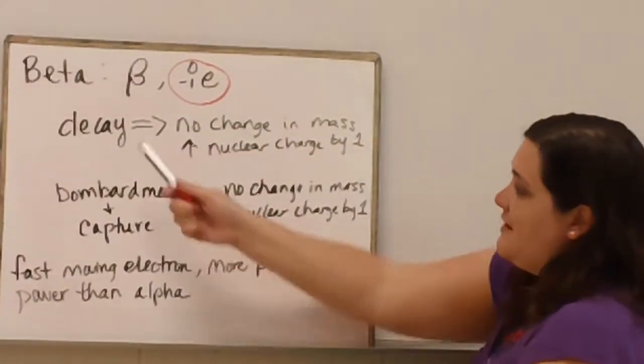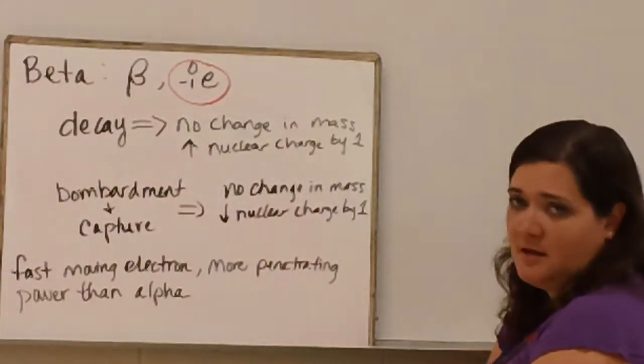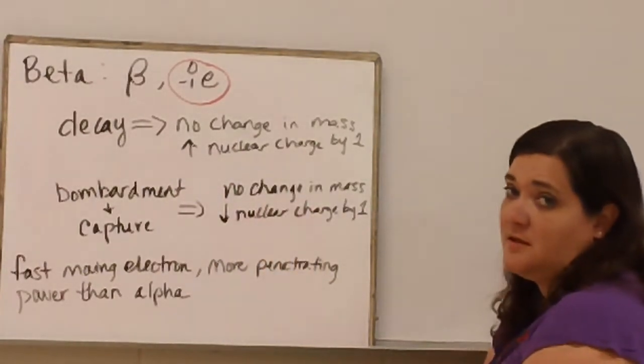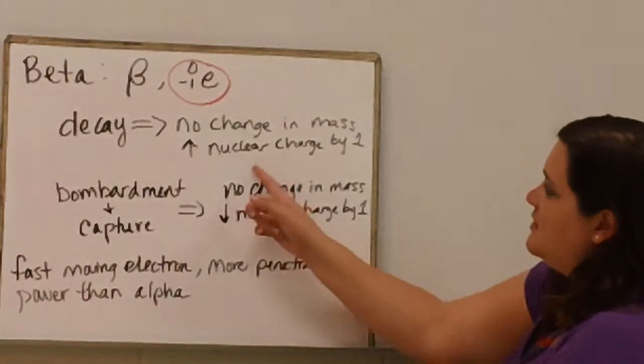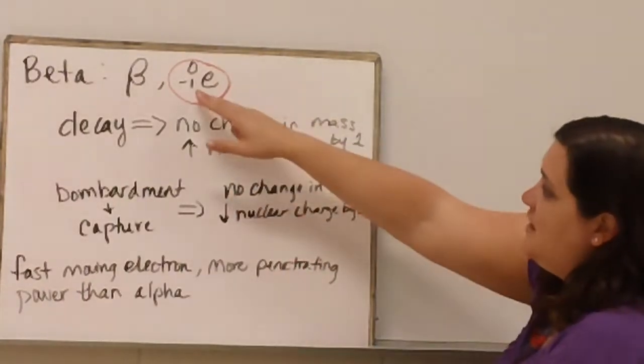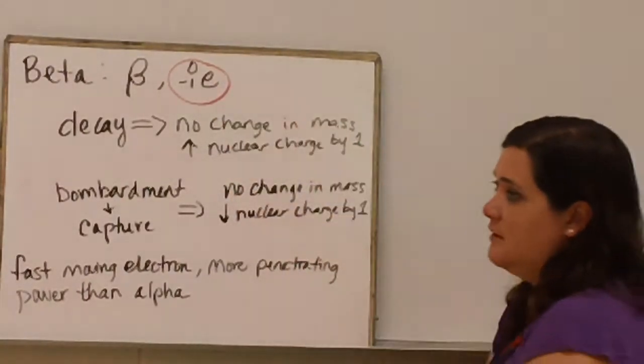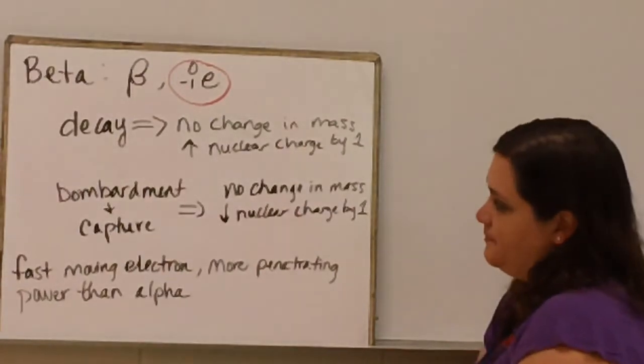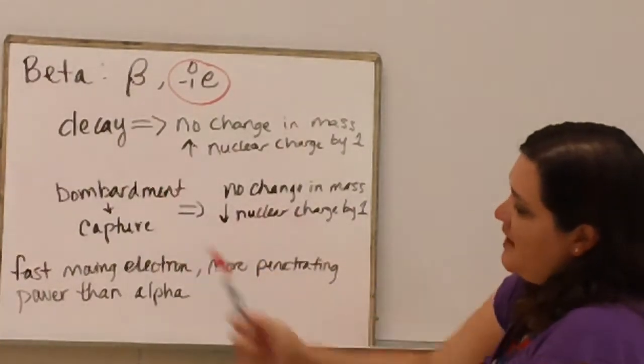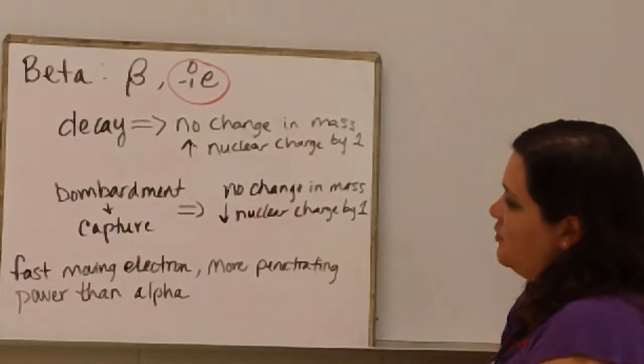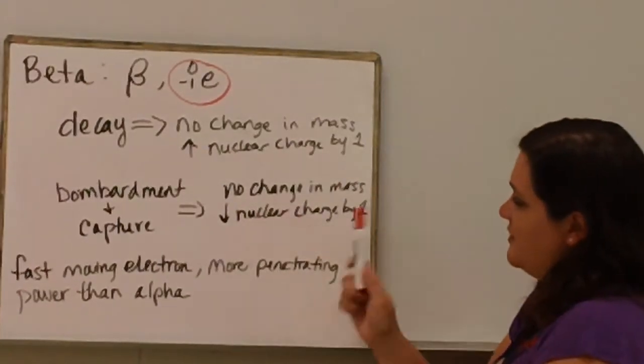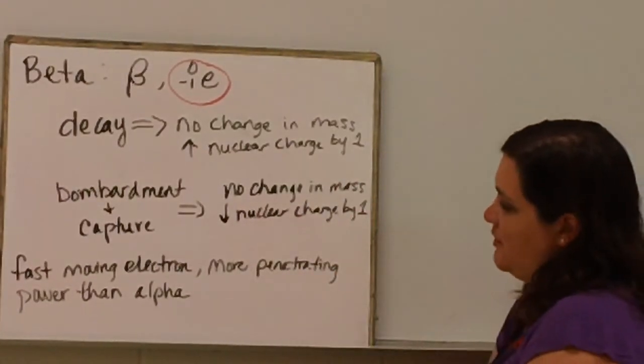Once something undergoes beta decay, there is no change in its mass, but there is an increase in nuclear charge because an electron has no mass and has a negative 1 charge. Bombardment and capture of a beta particle would result in no change in mass and a decrease in nuclear charge by 1.